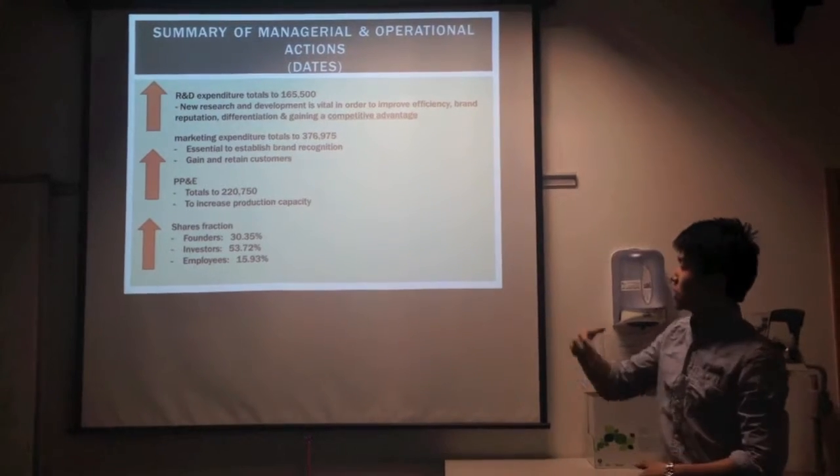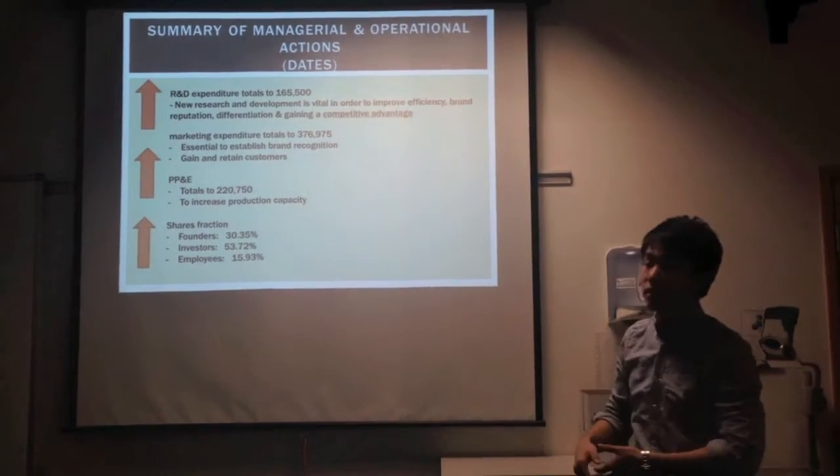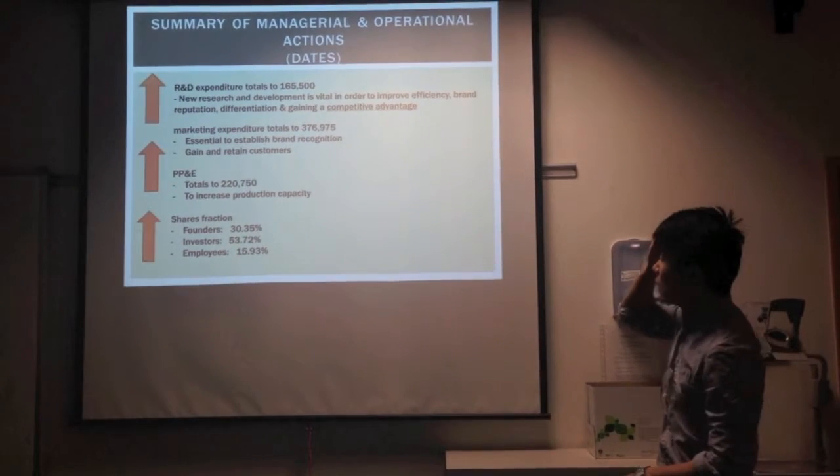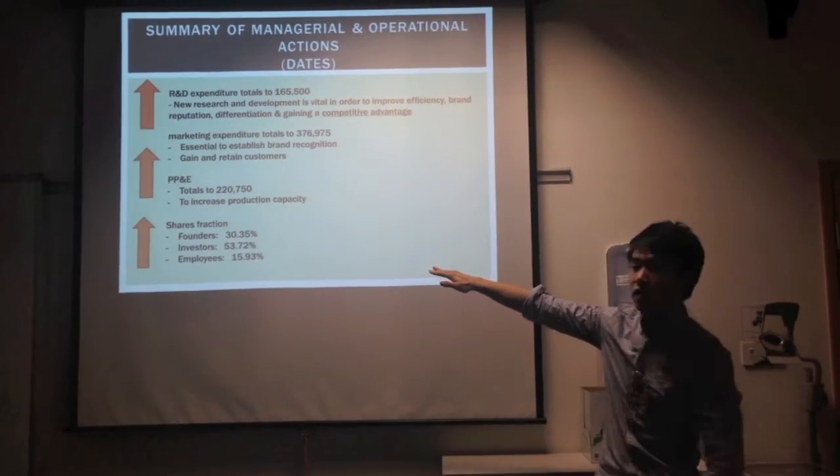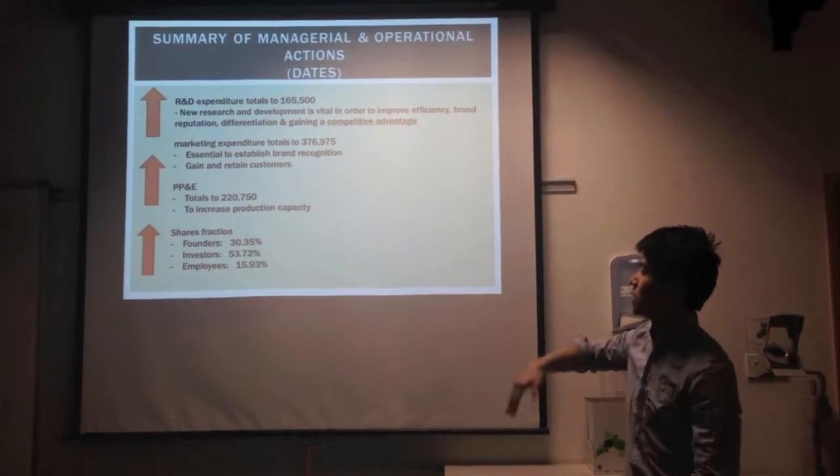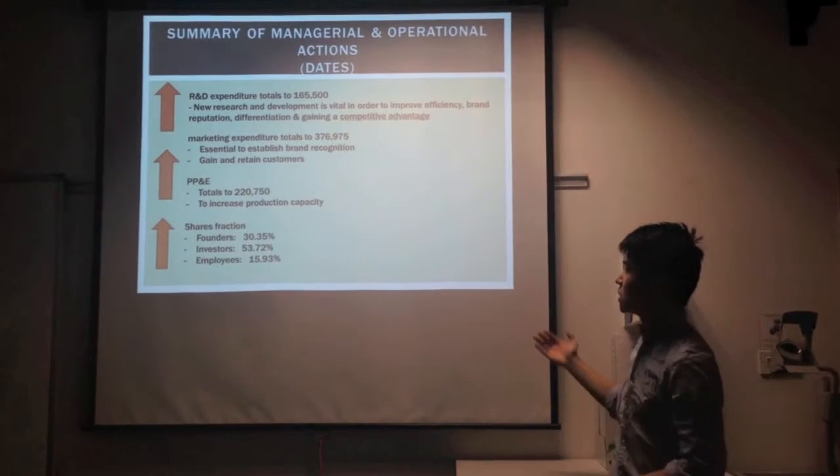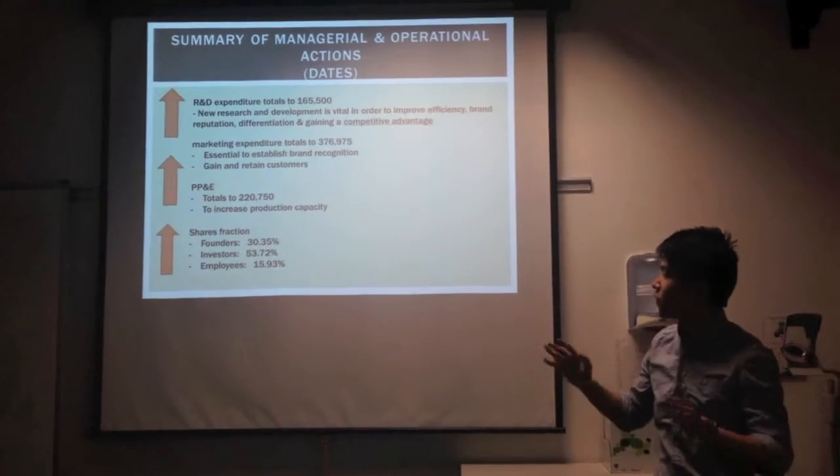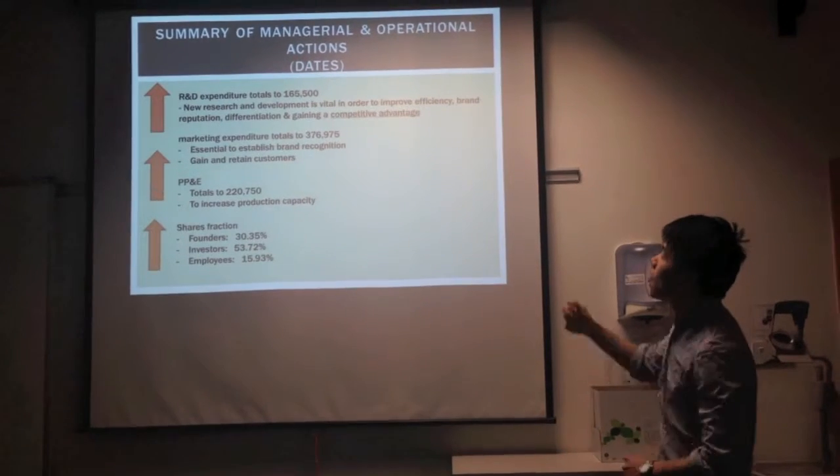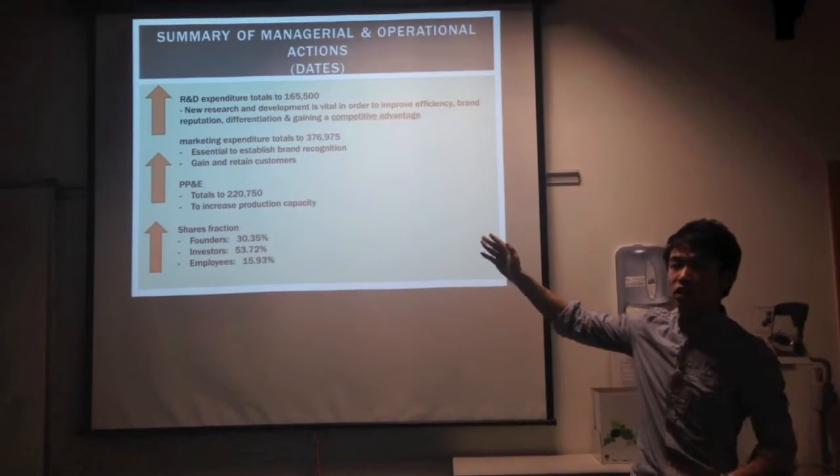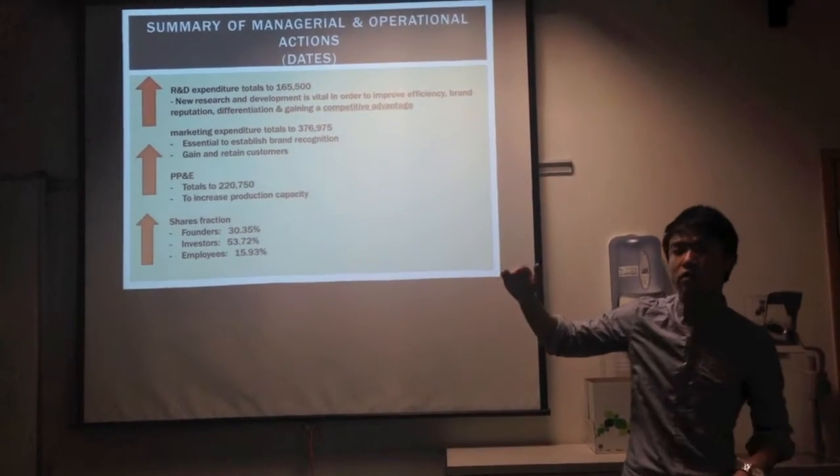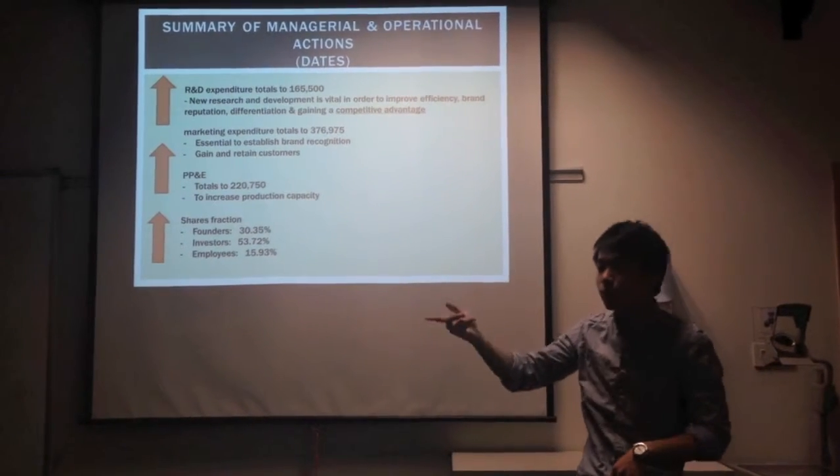Here is our share distribution: 30% of shares went to foreigners, 53% went to investors, and 15% went to employees to increase productivity. As you can see from this share fraction, employees received the lowest rate of shares, which resulted in another big problem for us.